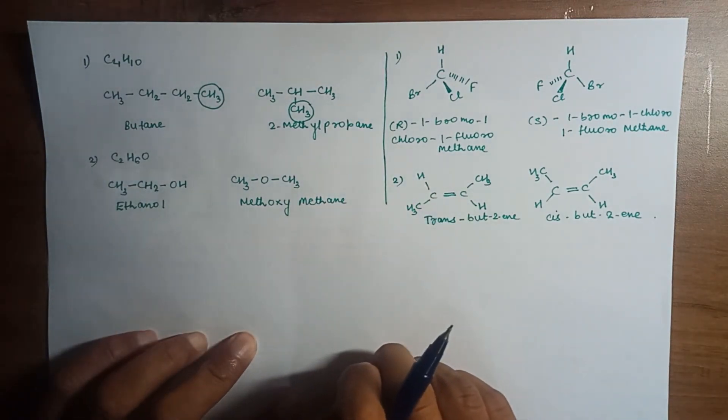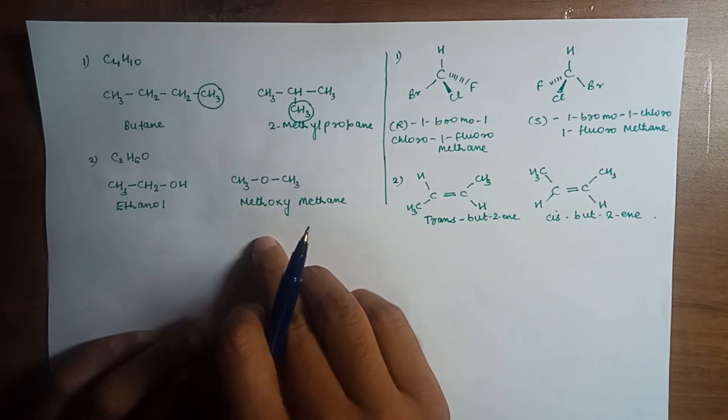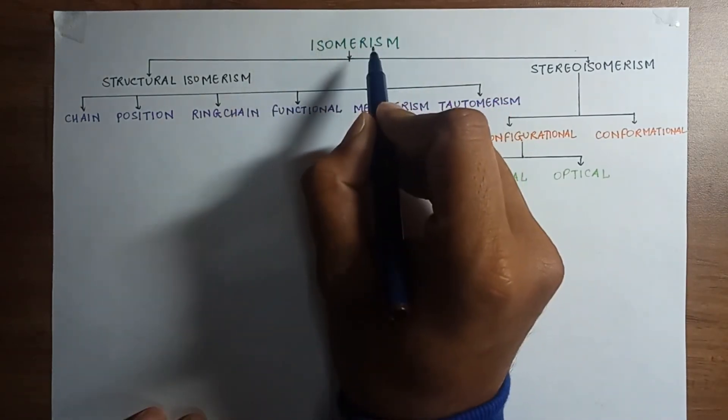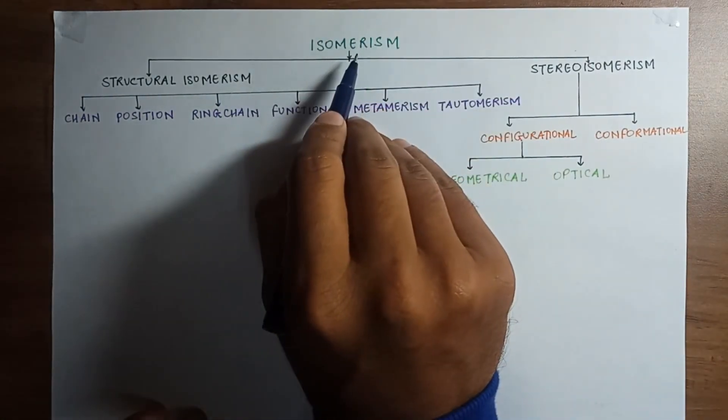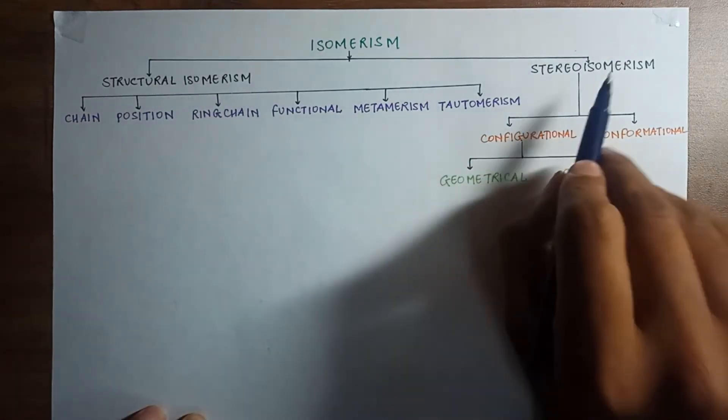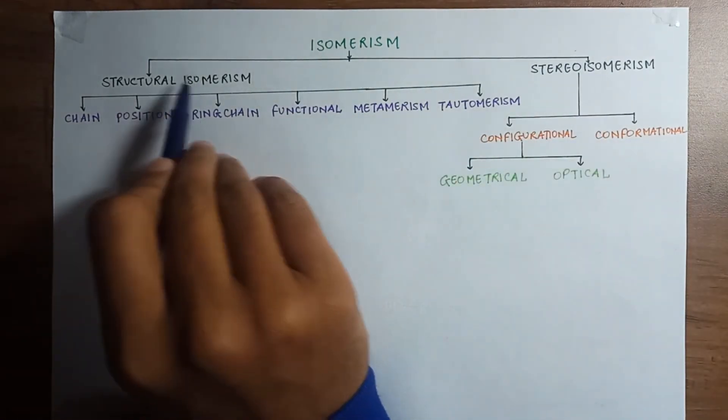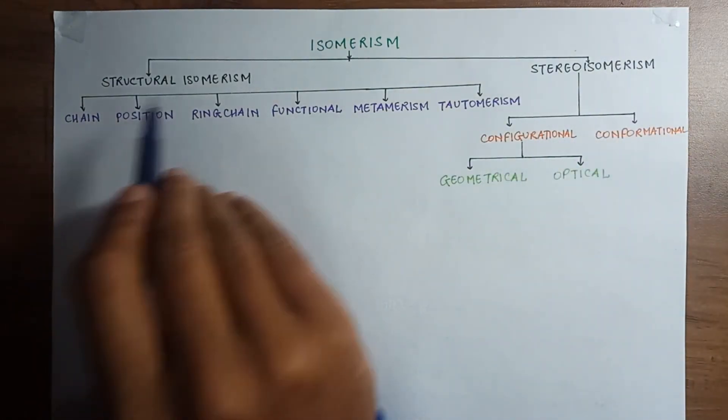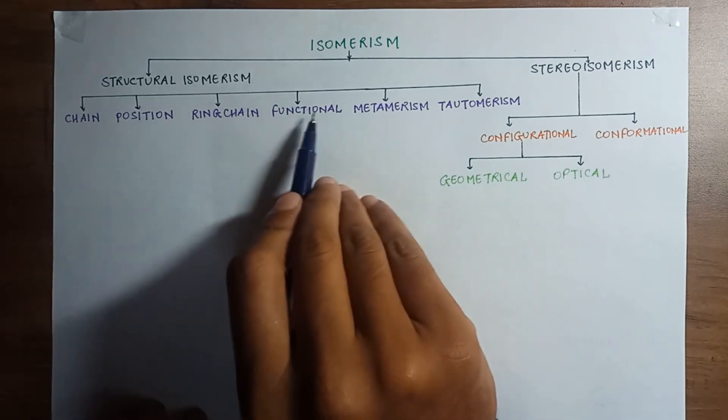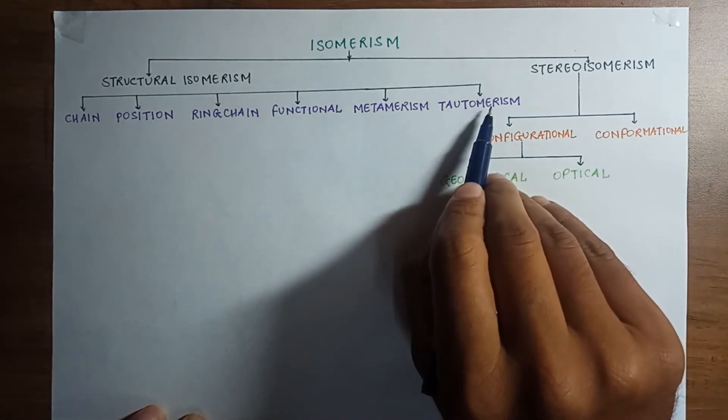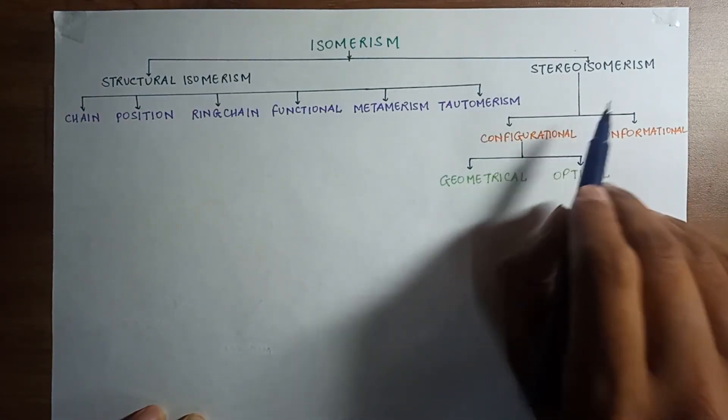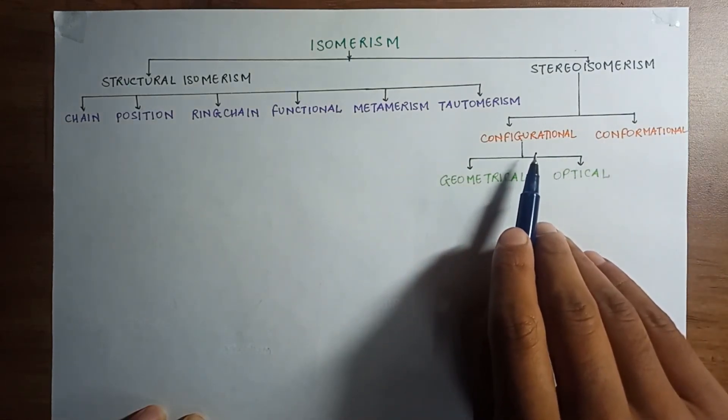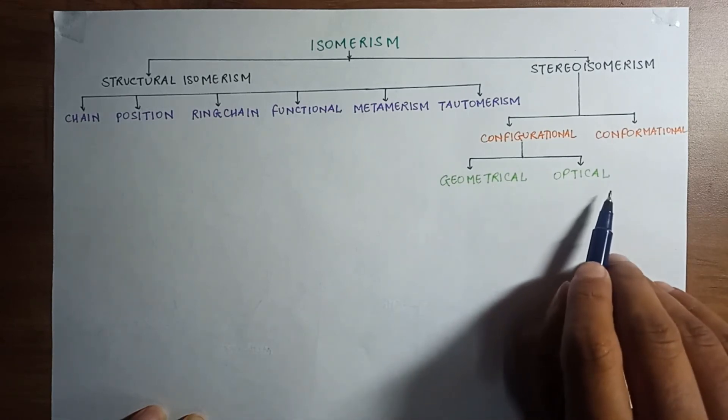So we have seen what are structural isomers as well as what are stereo isomers. The broad classification of isomerism is as follows: Isomerism has been classified into structural isomerism and stereoisomerism. These structural isomers are further classified as chain, position, ring chain, functional, metamerism, and tautomerism. These stereo isomers are further classified as configurational isomers and conformational isomers. Configurational isomers are further classified as geometrical and optical.